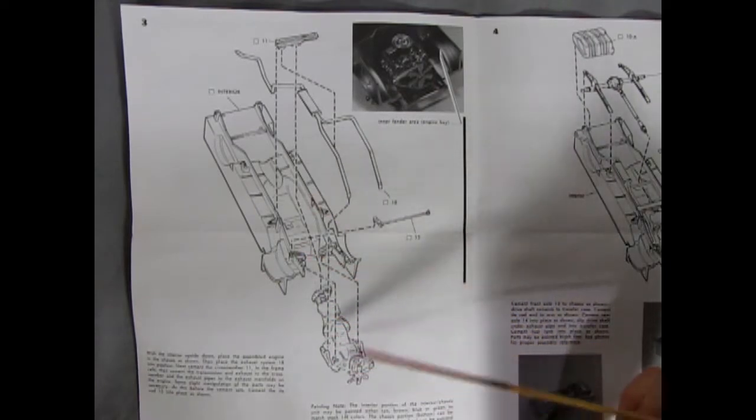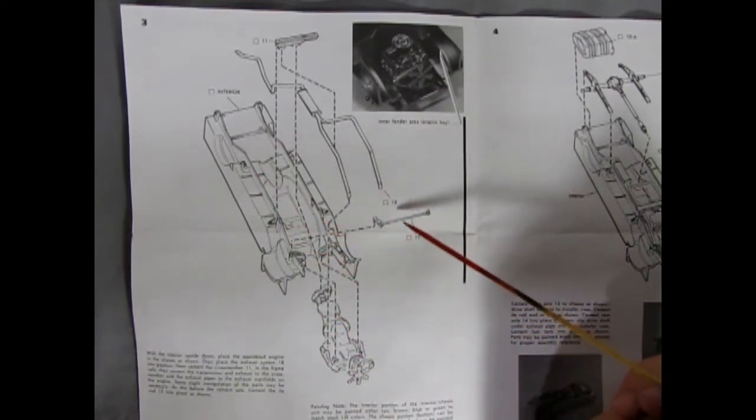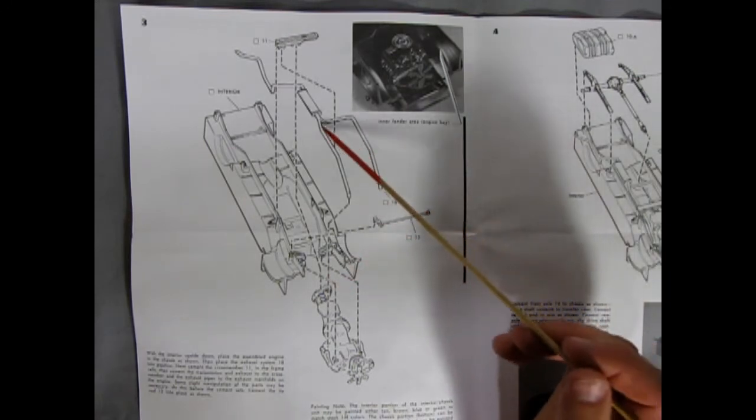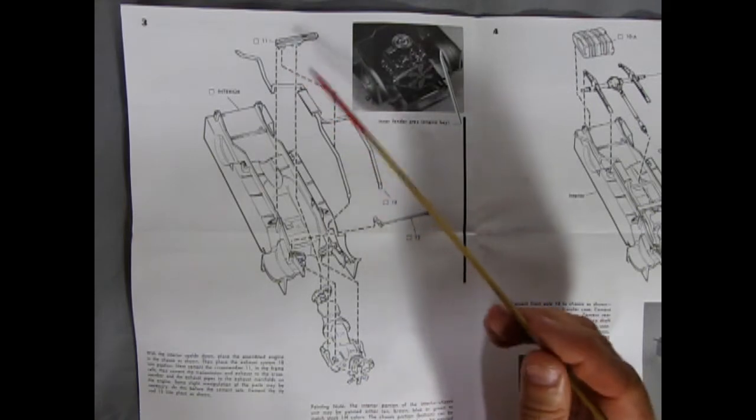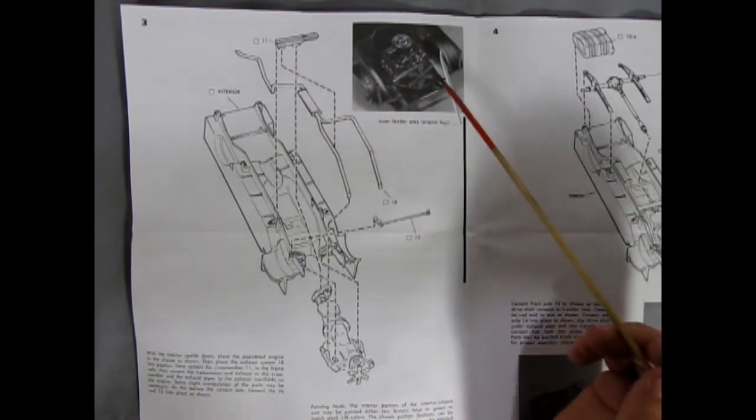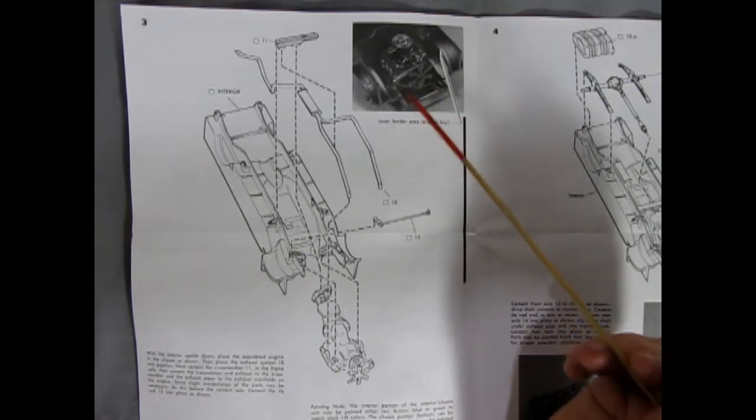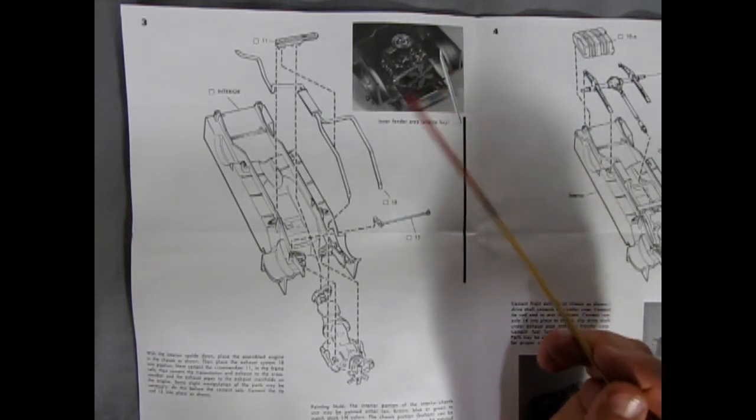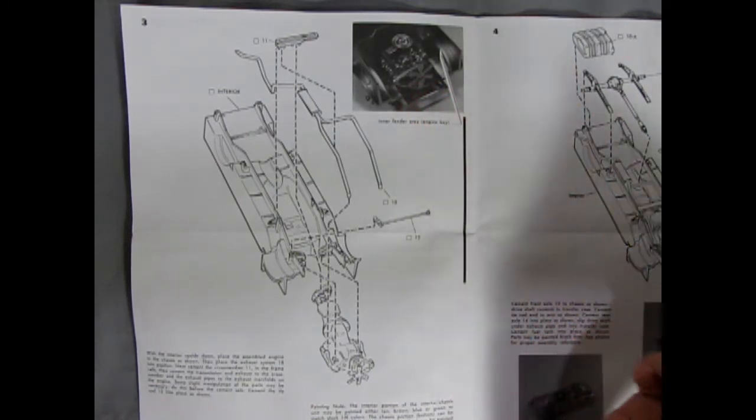Now here we have an interesting thing going on. We have our engine dropping into the chassis and we've of course got our steering linkages and our exhaust pipes with the muffler in there as well as braces for the engine. But what's really unique is this photograph showing you how it all goes together. And this is not a usual AMT kind of thing, so this again is why I'm thinking that another manufacturer made this and AMT bought it off of them.